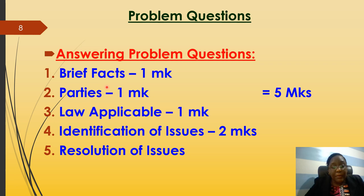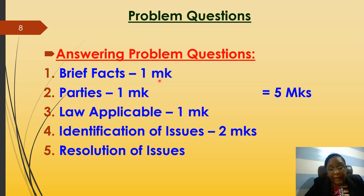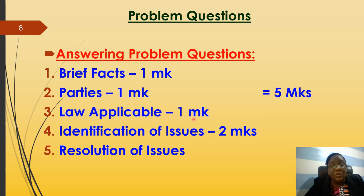For a problem question, the first thing to address is the brief facts: underline it and outline the brief facts in one paragraph, summarizing each paragraph of the question into one line — about three to four lines of what is generally happening. That earns you one mark. Then identify the parties — who are the people in the problem — and simply list them: John, Betty, Vero, Brian, etc. That is already one more mark. Third, identify the law — is it contract law, sale of goods, case law? Identify that for another mark.